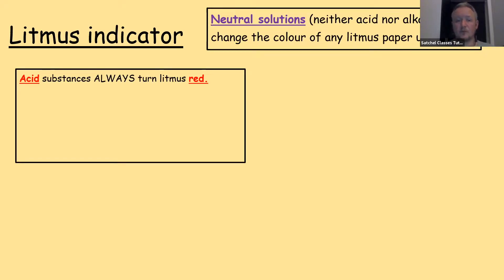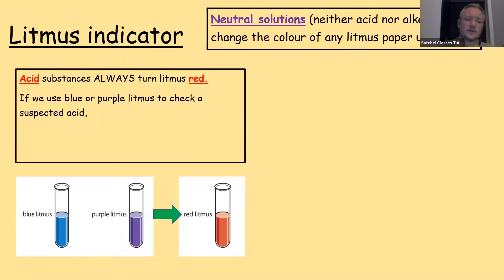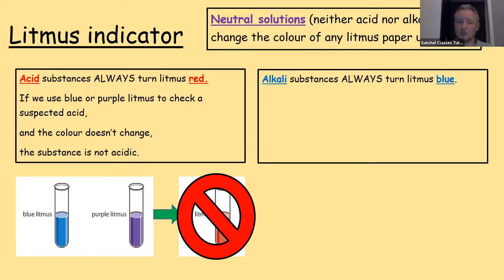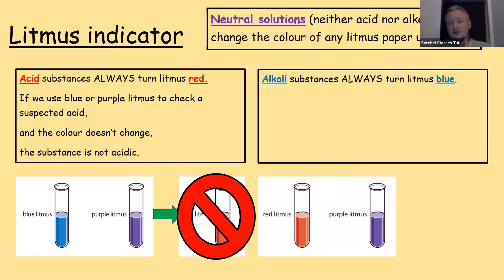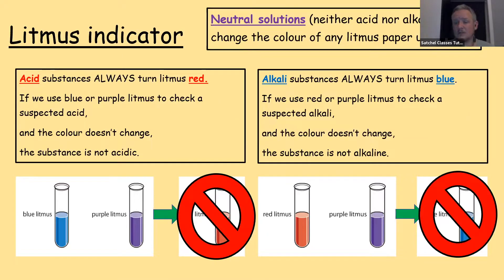Acid substances always turn litmus red. So if I have a blue litmus or a purple litmus and I add an acid to it, it will change colour and look red. If we use blue or purple litmus to check a suspected acid and the colour doesn't change, then the substance is not acidic — that's a negative test. Alkali substances always turn litmus blue. So if I have red or purple litmus and add an alkali substance, they should go blue. If the colour doesn't change, the substance is not an alkaline.